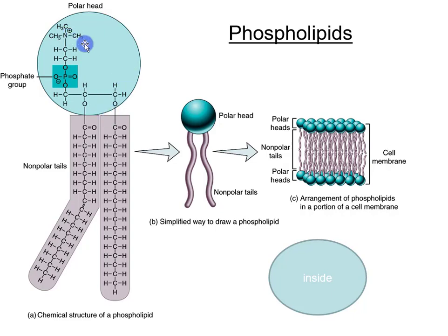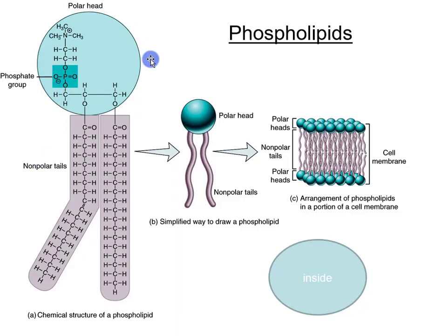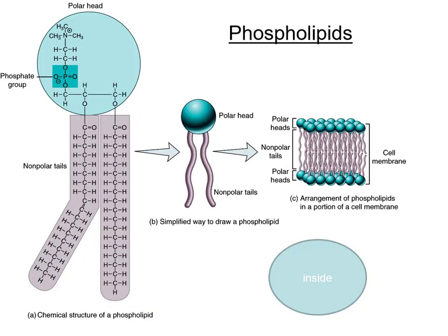For now, what you need to know is that the phospholipid has a polar head and nonpolar tails, and it's famous for being in the cell membrane. The building blocks of a phospholipid are a phosphate-containing head and two fatty acids. A saturated fatty acid has all single bonds between carbon atoms, and an unsaturated fatty acid has at least one double bond between carbon atoms.